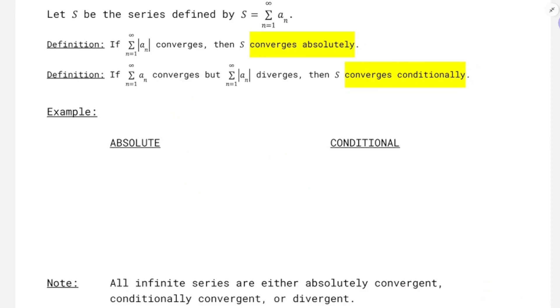So our definitions of absolute and conditional convergence. Pretty much if S is the series defined by the sum of a_n as n runs from 1 to infinity, if the series defined by the absolute value of the terms still converges, that'll be absolute convergence. That's why we call it absolute convergence. And if the series converges, but if I take the absolute value of its terms and add them up, and that series diverges, that's going to be conditional convergence.